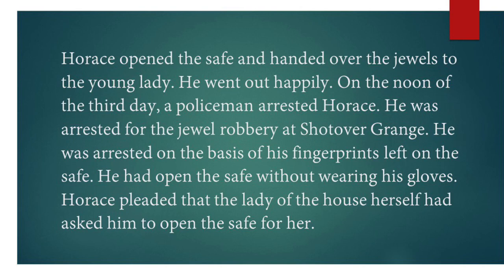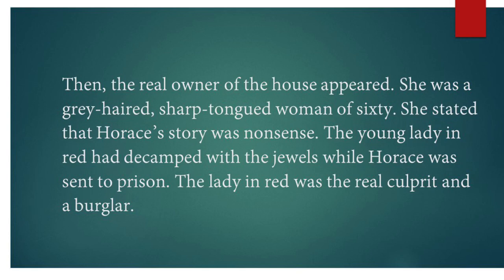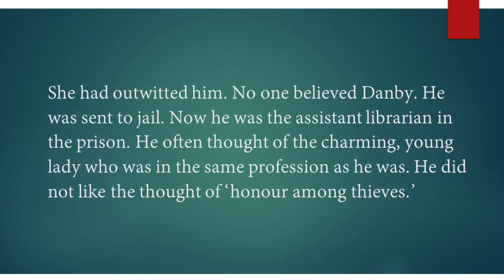On the noon of the third day, a policeman arrested Horace for the jewel robbery at Shortover Grange. He was arrested on the basis of fingerprints left on the safe, as he had opened it without wearing his gloves. Horace pleaded that the lady of the house herself had asked him to open the safe. Then the real owner of the house appeared — a gray-haired, sharp-tongued woman of sixty — who stated that Horace's story was nonsense. The young lady in red had decamped with the jewels while Horace was sent to prison. She was the real culprit and burglar; she had outwitted him. No one believed Danby and he was sent to jail, where he became the assistant librarian. He often thought of the charming young lady who was in the same profession as he was, and did not like the thought of honor among thieves.